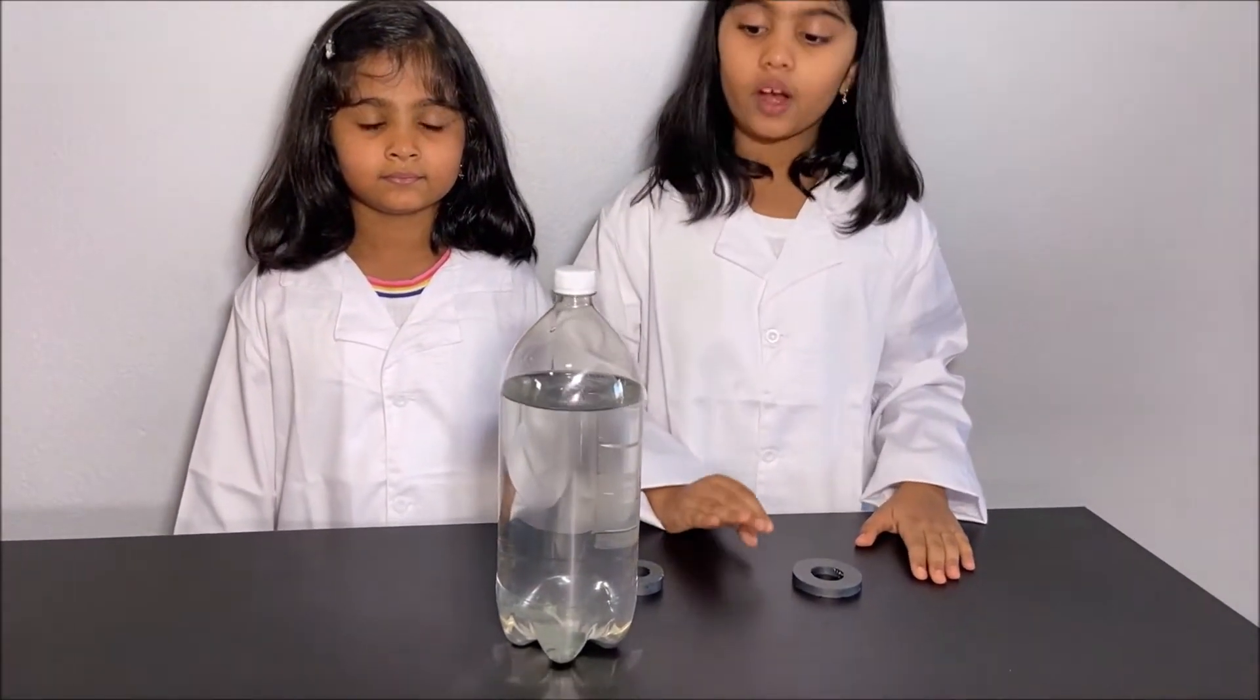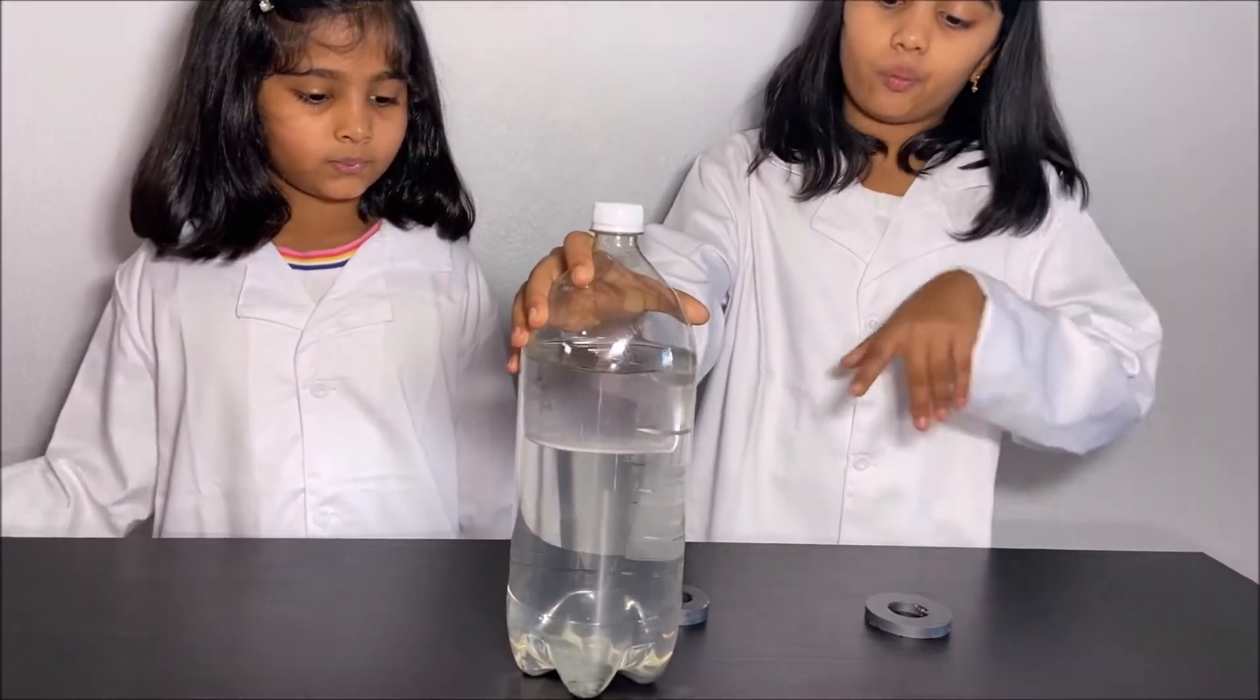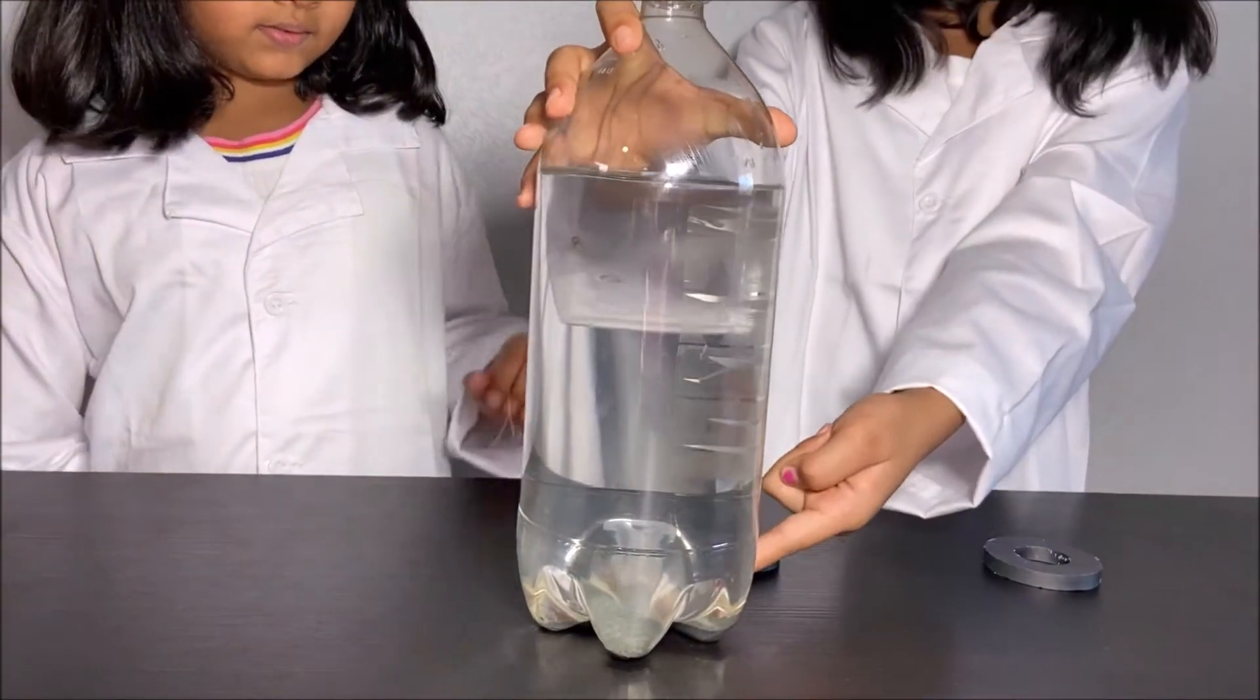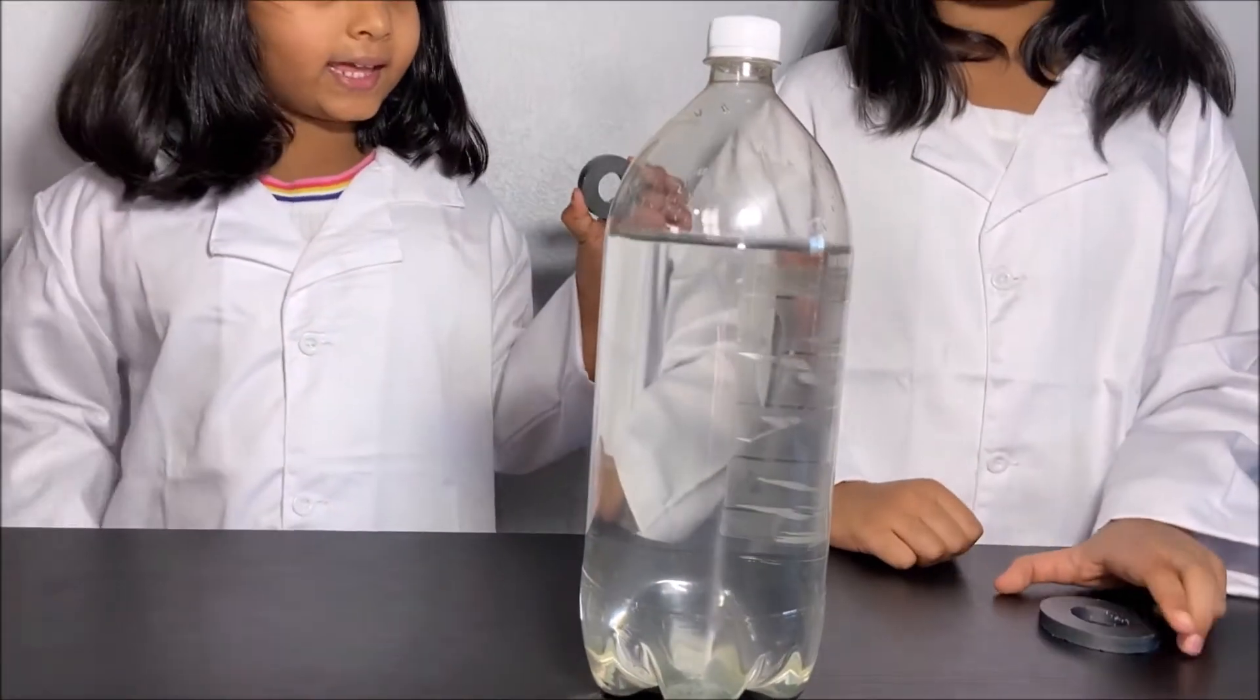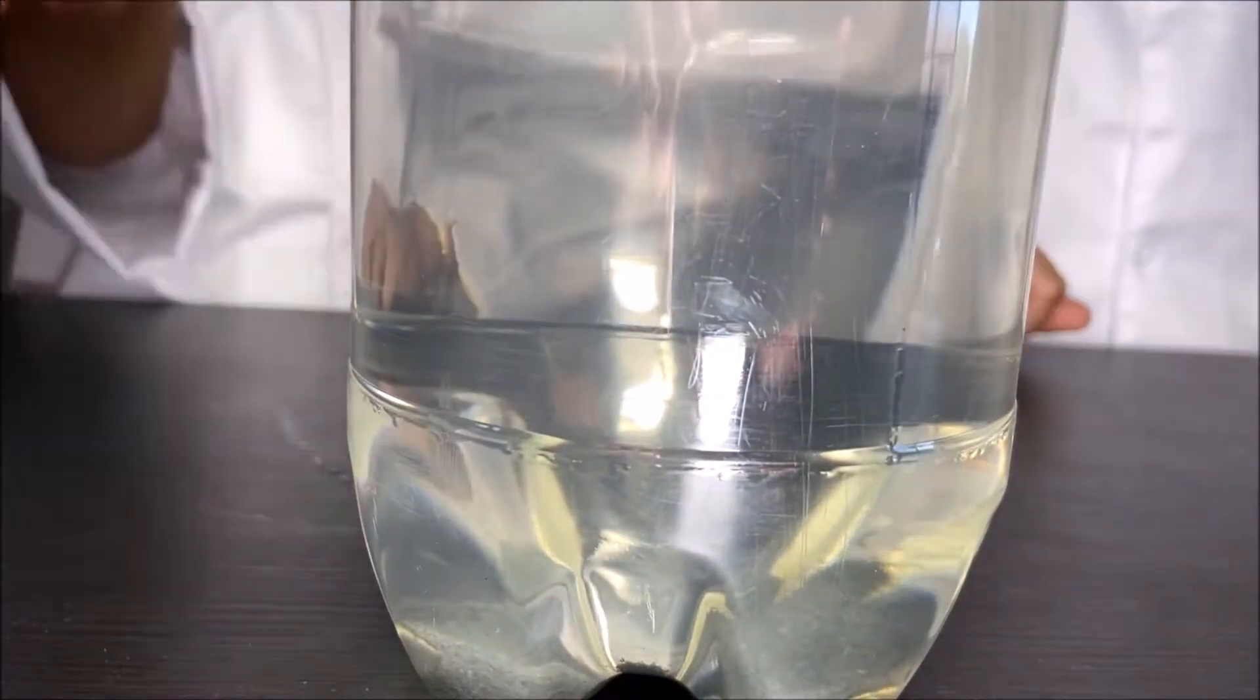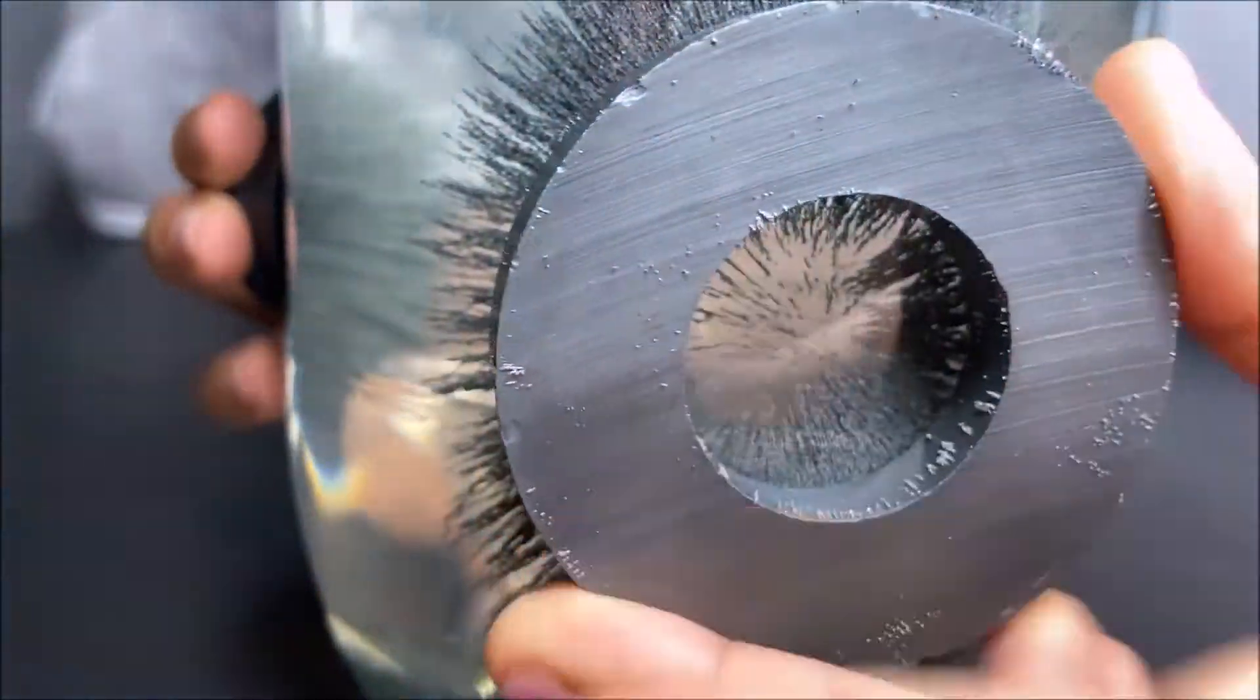What you will need for this experiment about magnets is a bottle with some water, and inside the water you will need some iron filings and two magnets. So first put the bottle upside down and then put your magnets on the side of the bottle quickly.